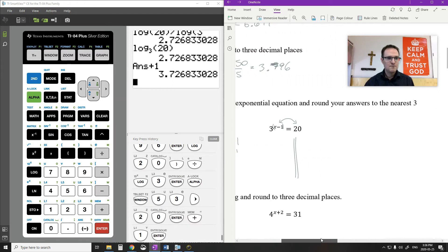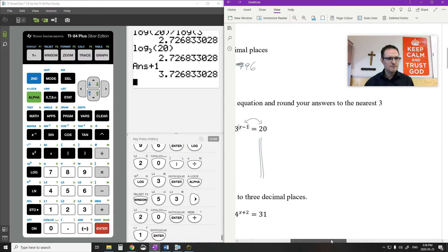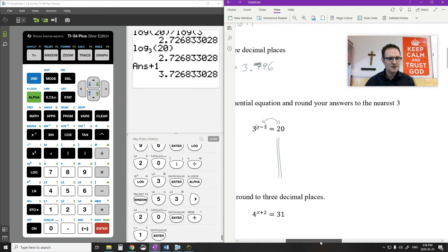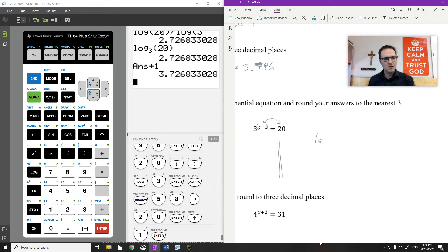Now another way to do this, which is more common when it comes to these kinds because of the older style calculators, is to take the log of both sides. So if I take the log of both sides, I'm going to take the log of 20 on the right side, the log of 3 to the power of x minus 1 on that side.